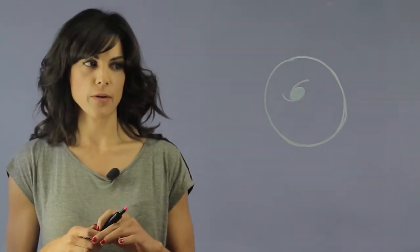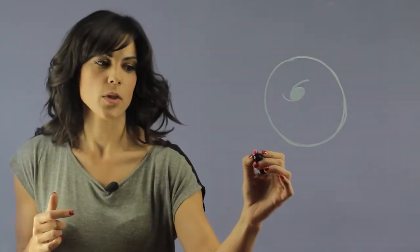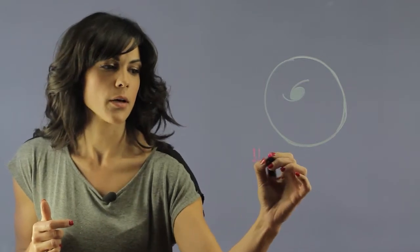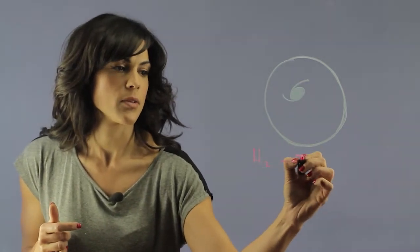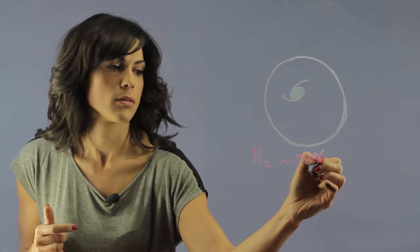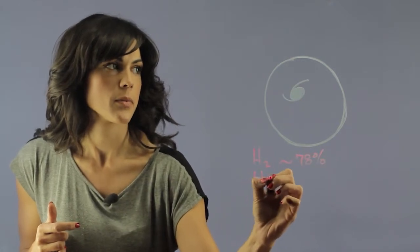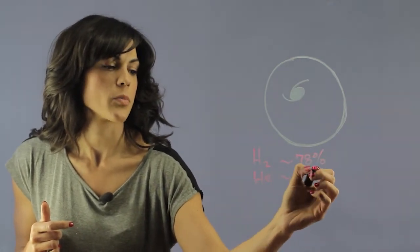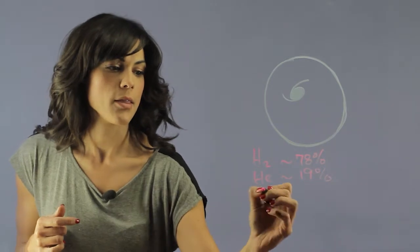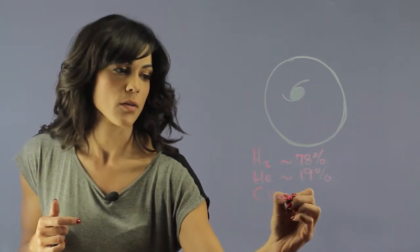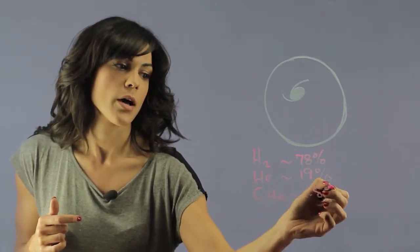The main composition of the atmosphere overall has molecular hydrogen, which is about 78 percent. It has helium, which is about 19 percent, and then it has methane, which is 1.5 percent.